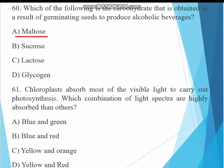Question 61. Chloroplasts absorb most visible light to carry out photosynthesis. Which combination of light spectra is highly absorbed than the others? The answer must be blue and red. Blue and red light is most efficiently absorbed by chlorophyll for photosynthesis.